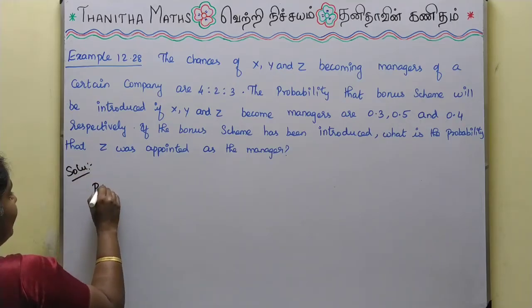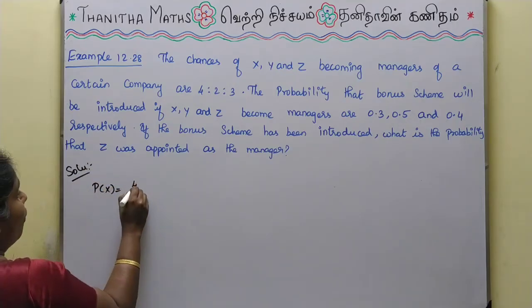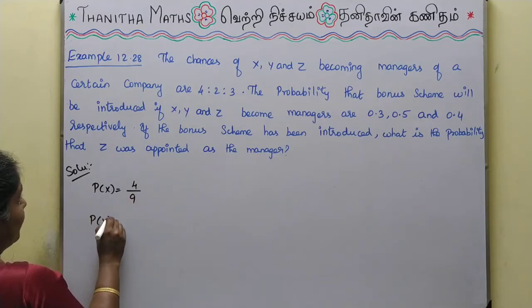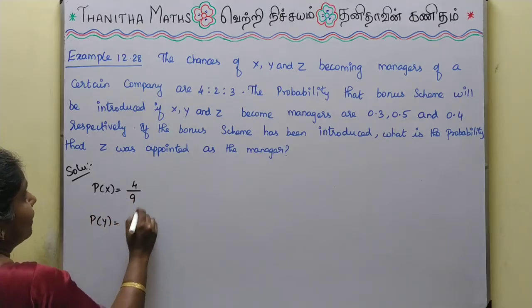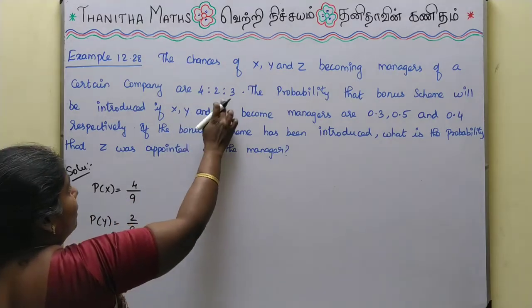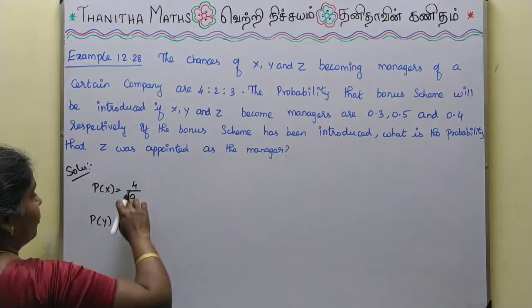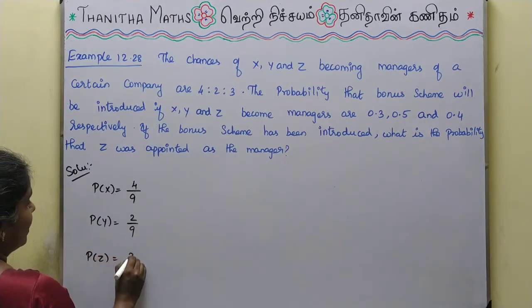P of X is 4 by 9. P of Y is 2 by 9, that is each chance divided by the total value. And P of Z is 3 by 9.